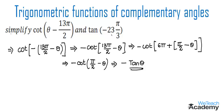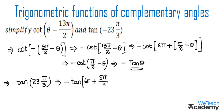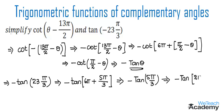Now let us consider tan(−23π/3). We can write this as minus tan(23π/3). Simplifying, we get minus tan(6π + 5π/3), which further simplifies to minus tan(2π − π/3). This is in the form of tan(180° − θ), which lies in the second quadrant where sin and cosecant are positive, so tan becomes negative. We get minus of minus tan(π/3).